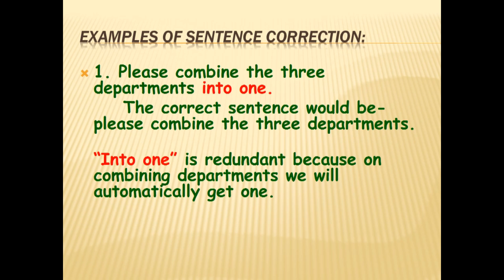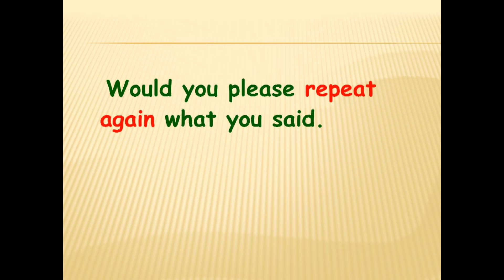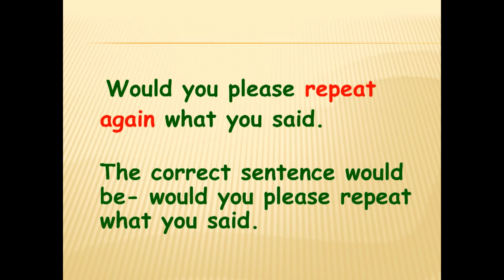Here are a few examples of sentence correction. Number one — 'Please combine the three departments into one.' The correct sentence would be: 'Please combine the three departments.' The phrase 'into one' is redundant because combining three departments automatically results in one. Number two — 'Would you please repeat again what you said?' The correct sentence is: 'Would you please repeat what you said?' There is no need to use the word 'again.'